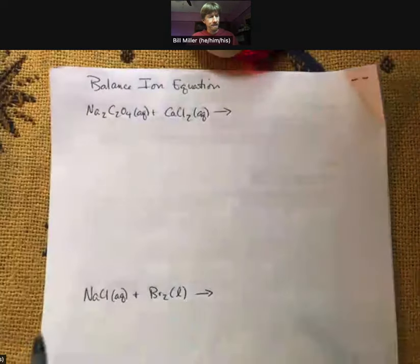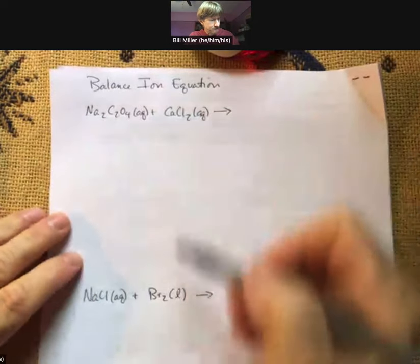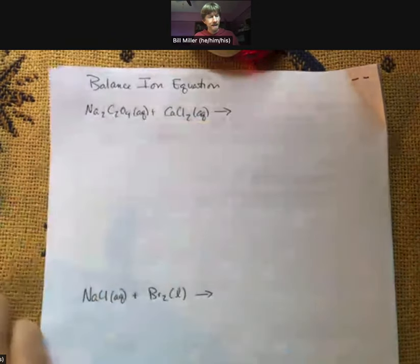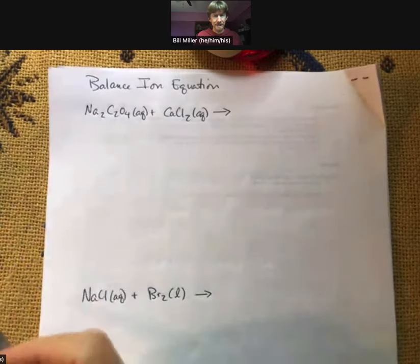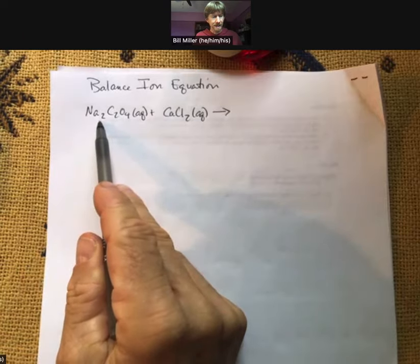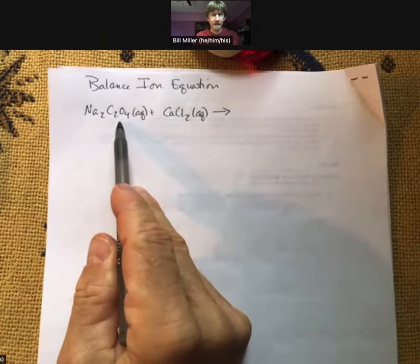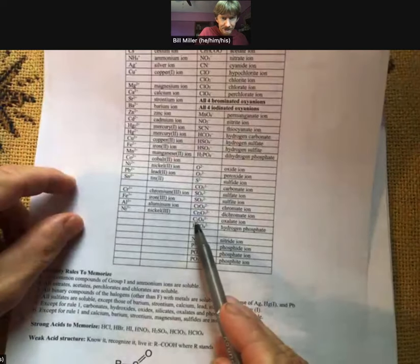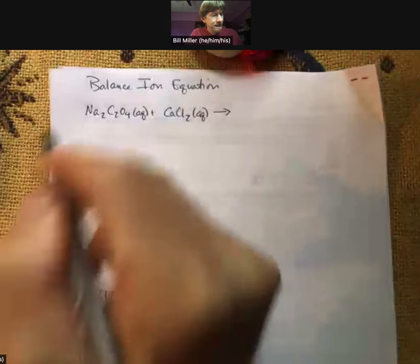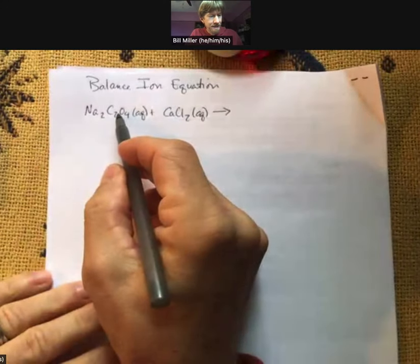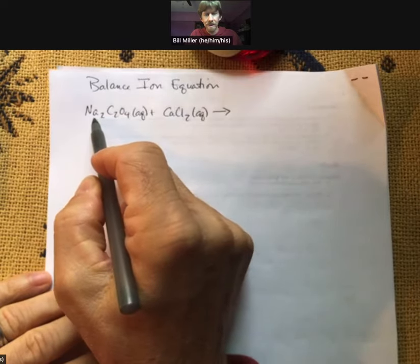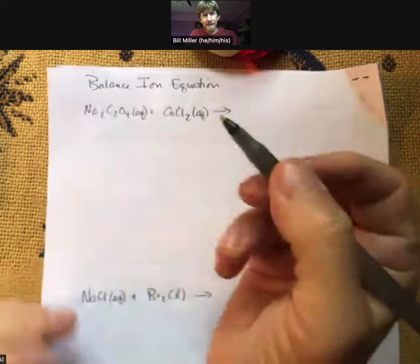I've got an example of a type of problem that you're seeing, actually two types of problems here. We're going to work through this first one. If we were naming compounds we would see that this is sodium oxalate. Sodium ion is Na plus, oxalate ion is C2O4 2 minus. Because oxalate is 2 minus and sodium is plus 1, that means that we need two sodium ions.